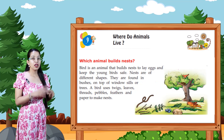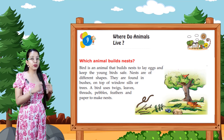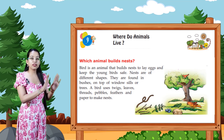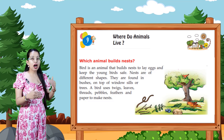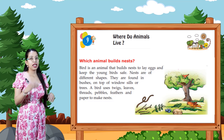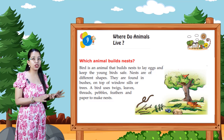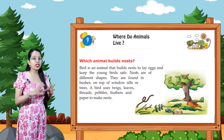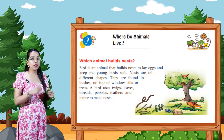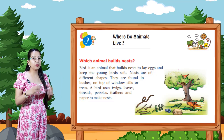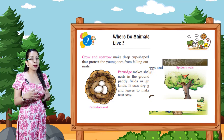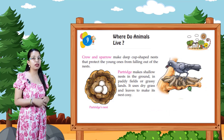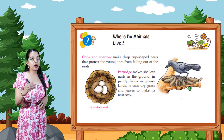Which animal builds nests? Birds build nests to lay eggs and keep the young birds safe. Nests are of different shapes. They are found in bushes, on top of windows, ledges, or trees. A bird uses twigs, threads, pebbles, feathers, and papers to make nests. Crow and sparrows make deep cup-shaped nests that protect the young ones from falling out.